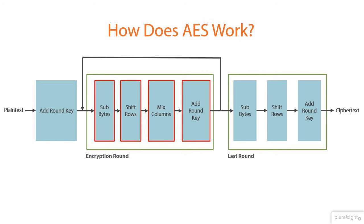Then there is a shift-row step, where there is a transposition step where the last three rows of the state are shifted cyclically a certain number of steps. Next, there is a mix-column step, where a mixing operation operates on the columns of the state, combining the four bytes in each column. Then there is another add-round key step. These four steps are repeated for the desired number of rounds based on the size of the key.